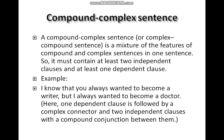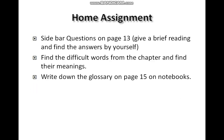A compound-complex sentence is a mixture of both features of compound and complex sentences in one sentence. It must contain at least two independent clauses and at least one dependent clause. For example: 'I know that you always wanted to become a writer, but I always wanted to become a doctor.' Here one dependent clause is followed by a complex connector and two independent clauses with a compound conjunction between them.